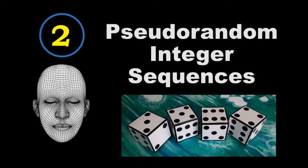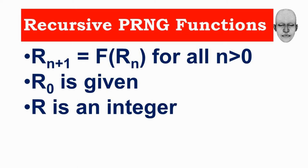Next we look at pseudo random integer sequences. Most pseudo random integer generators have the form shown here — they are implemented as recursive functions where r(n+1) is a function of r(n) for all n greater than zero, and r(0) is given. Here r is an integer, so given r(0), the function f calculates r(1), from r(1) it calculates r(2), and so on as any standard recursive function.